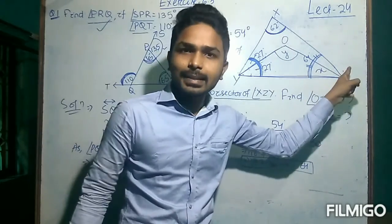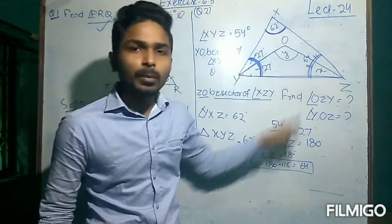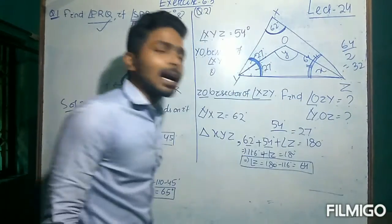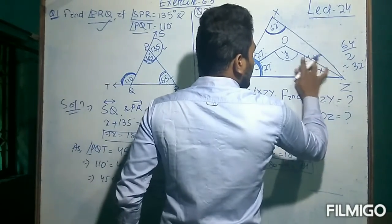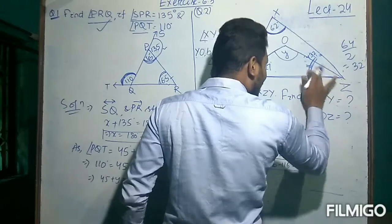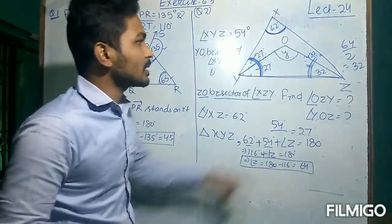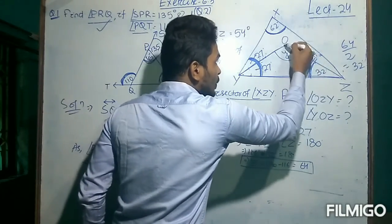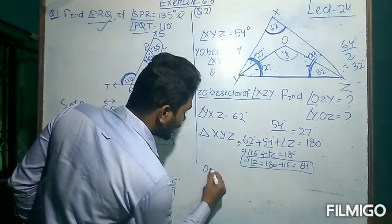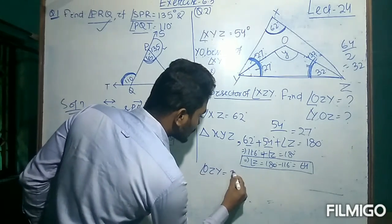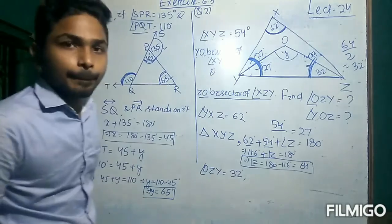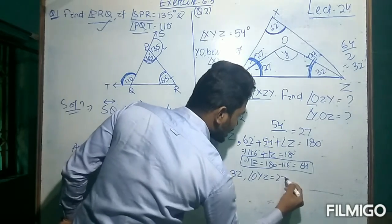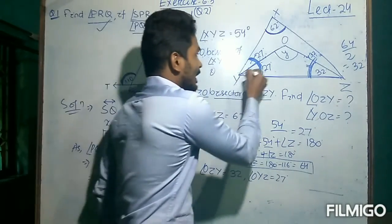So angle OZY is 32 degrees. Now, OYZ is also a triangle. For triangle OYZ, the sum of the three angles equals 180 degrees. So this angle plus this angle plus Y equals 180 degrees. Y equals 180 minus the sum of 27 and 32, which gives 59. So Y will be 121 degrees.